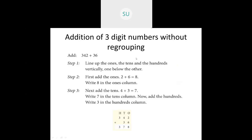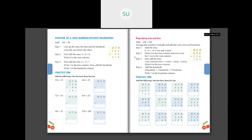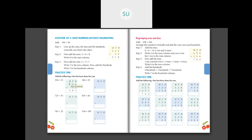Now we'll see a few problems — page number 98 in your textbook. The example shown is 534 plus 53. Write 534 in hundreds, tens, ones: 4 in ones, 3 in tens, 5 in hundreds. Then 53: 3 in ones, 5 in tens. Add ones: 4 plus 3 is 7. Add tens: 3 plus 5 is 8. Add hundreds: 5 plus 0 is 5. So the answer is five hundred and eighty-seven.